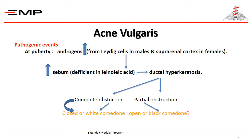The androgen-sensitive sebaceous hair follicle shows hyperresponsiveness, resulting in increased sebum excretion. Sebum is deficient in linoleic acid, a fatty acid important for normal cornification of cells of the pilosebaceous follicle. Accordingly, hyperkeratosis of the pilosebaceous duct occurs with obstruction of the sebum pathway. This results in the occurrence of the primary lesion of acne, which is the comedone.